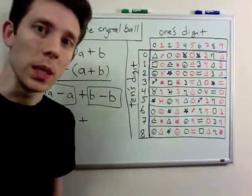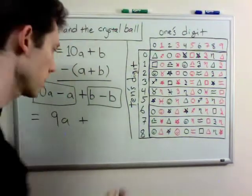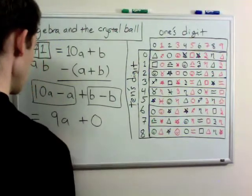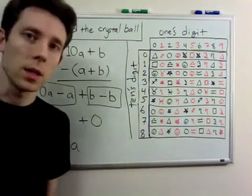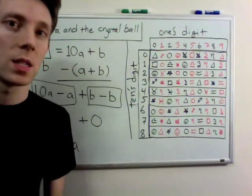How about b minus b? That one's even easier. That's just 0. So, in the end, it's always going to be 9 times a, the tens digit.